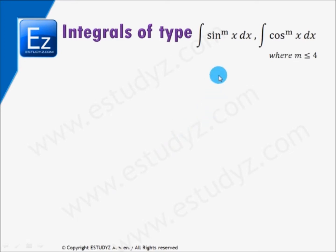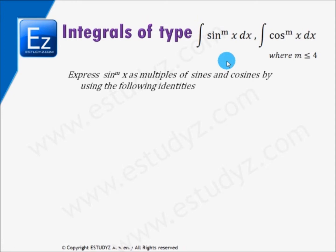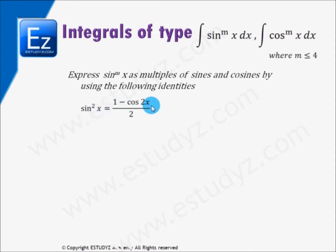Now, if you have an integral involving sin^m(x) or cos^m(x) where the power m is less than or equal to 4, you can apply the following steps. You must express sin^m(x) or cos^m(x) as multiples of sines and cosines using these trigonometric identities: sin²x = (1 − cos 2x)/2, and cos²x = (1 + cos 2x)/2.